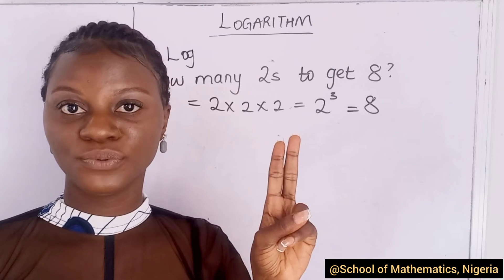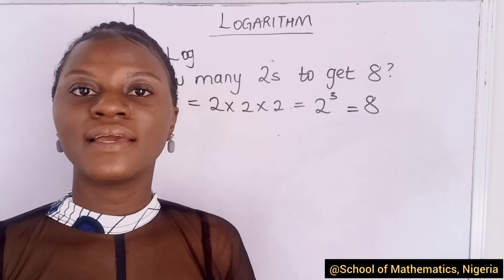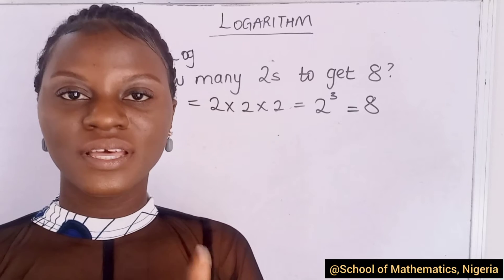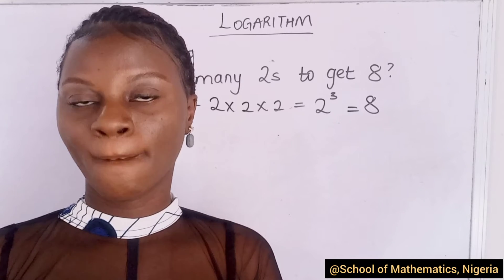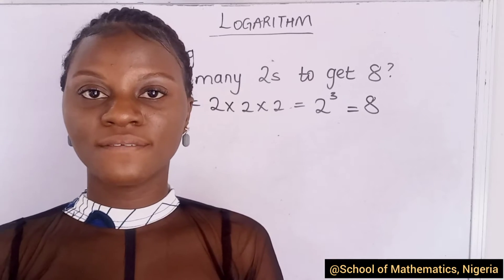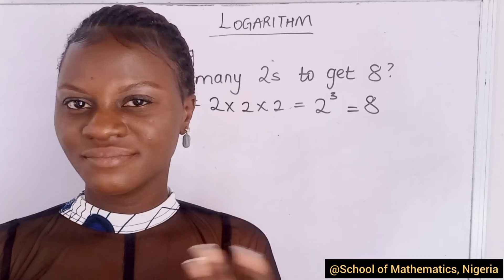You have to multiply two three times in order to get eight. That's two times two equals four, and four times two equals eight. So, you have to multiply two three times to get eight.